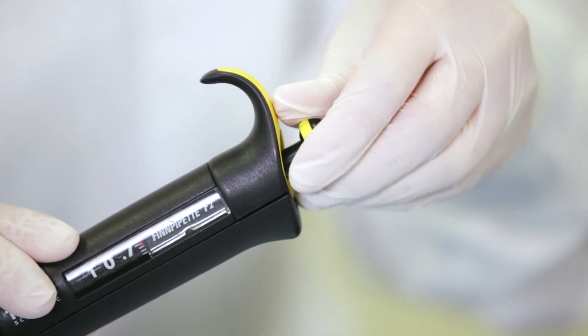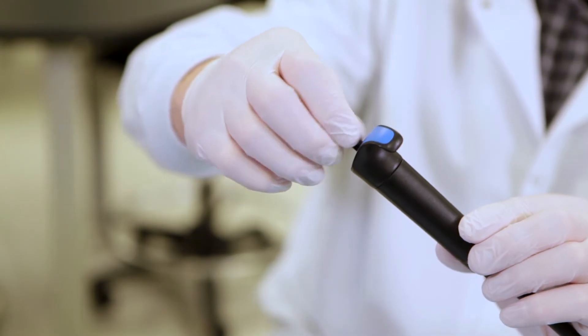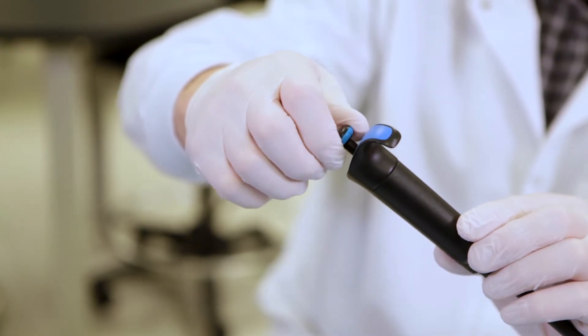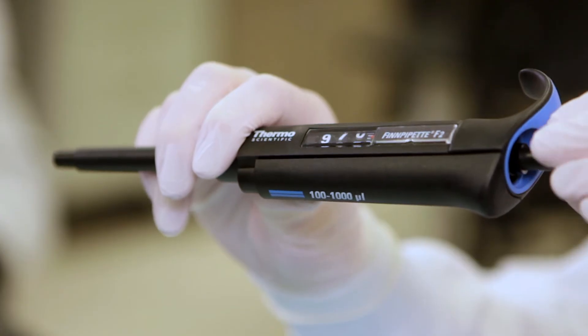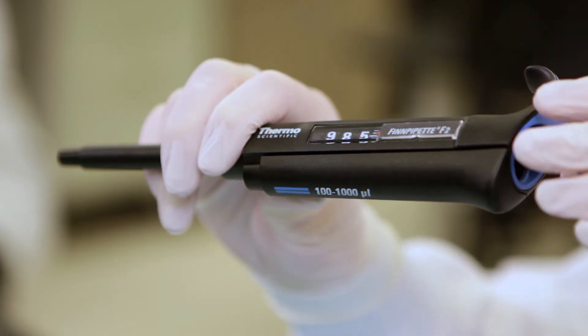Remember the dial numbers indicate different volumes depending upon which pipette is used. You should never use a pipette to measure volumes outside of its intended range. Doing so can cause inaccurate measurements and will damage the internal mechanisms of the pipette.